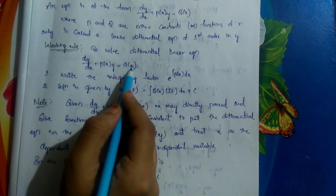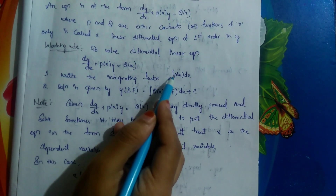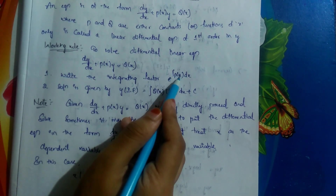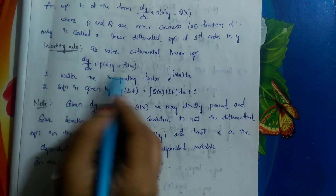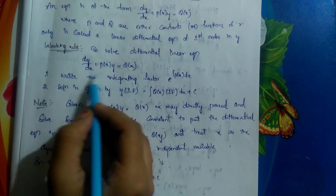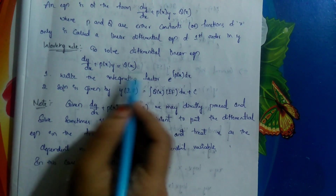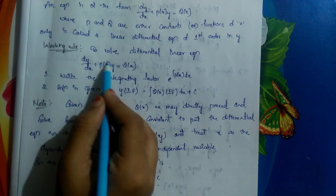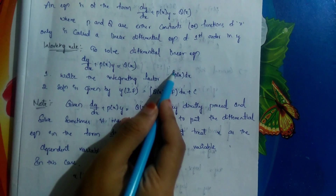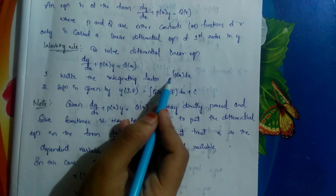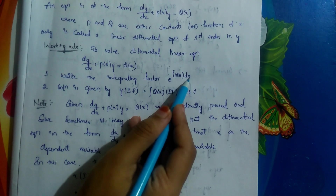To solve the linear equation dy/dx plus P(x)·y equals Q(x), first we write the integrating factor, which is e to the power of the integral of P(x) dx. From the equation, P(x) is a function in terms of x, and we take its integration to the power of e — so e to the power of ∫P(x) dx is the integrating factor.